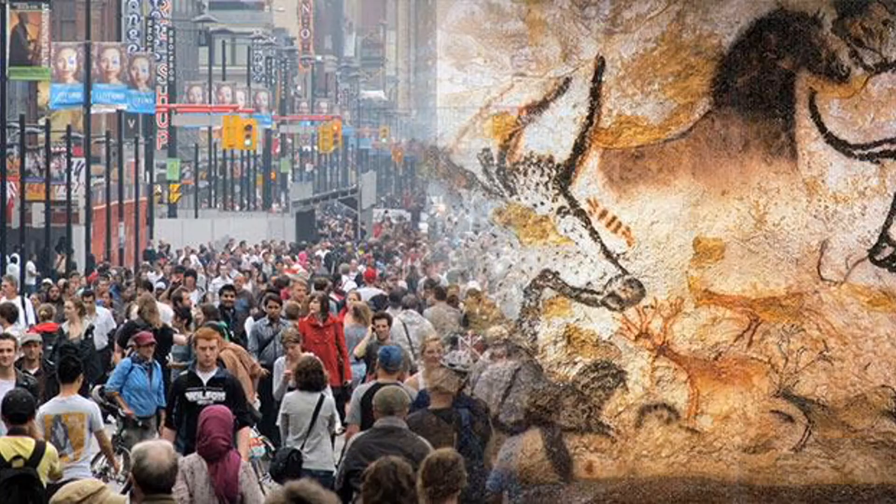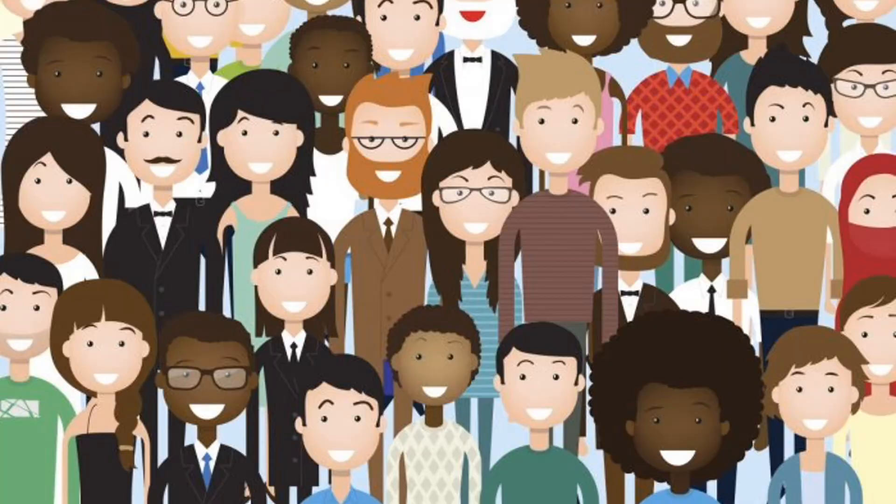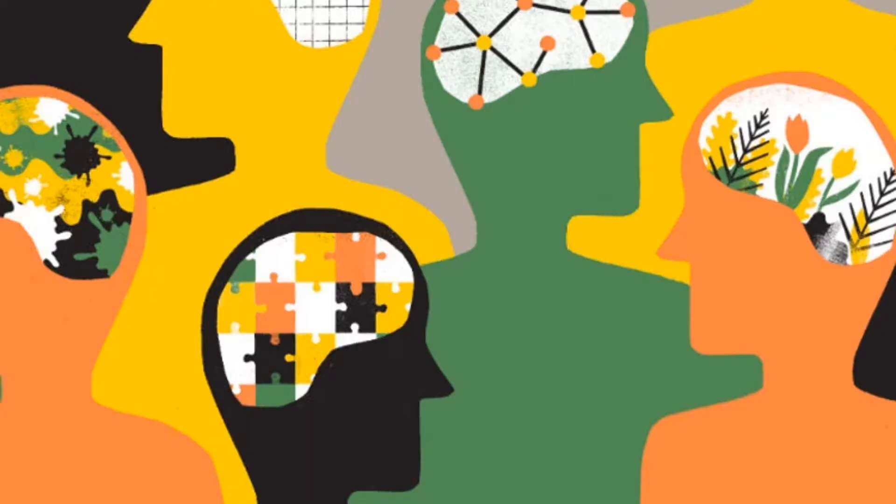The human sciences as a group of subject disciplines are really about humans and societies and different aspects of those societies. For example, four key subject areas in the human sciences are anthropology, economics, sociology, and psychology.